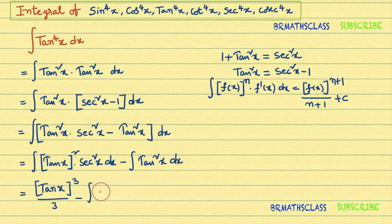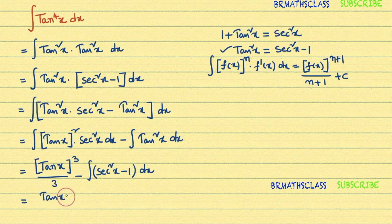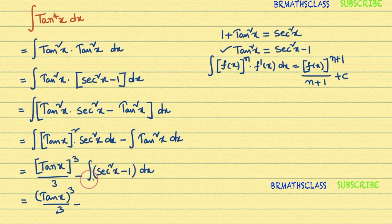For the second term, tan²x can be written as sec²x − 1, so the integral becomes integral of (sec²x − 1) dx. Integrating each term: integral of sec²x dx is tan x, and integral of 1 dx is x. So the result is tan³x/3 − (tan x − x) + C.